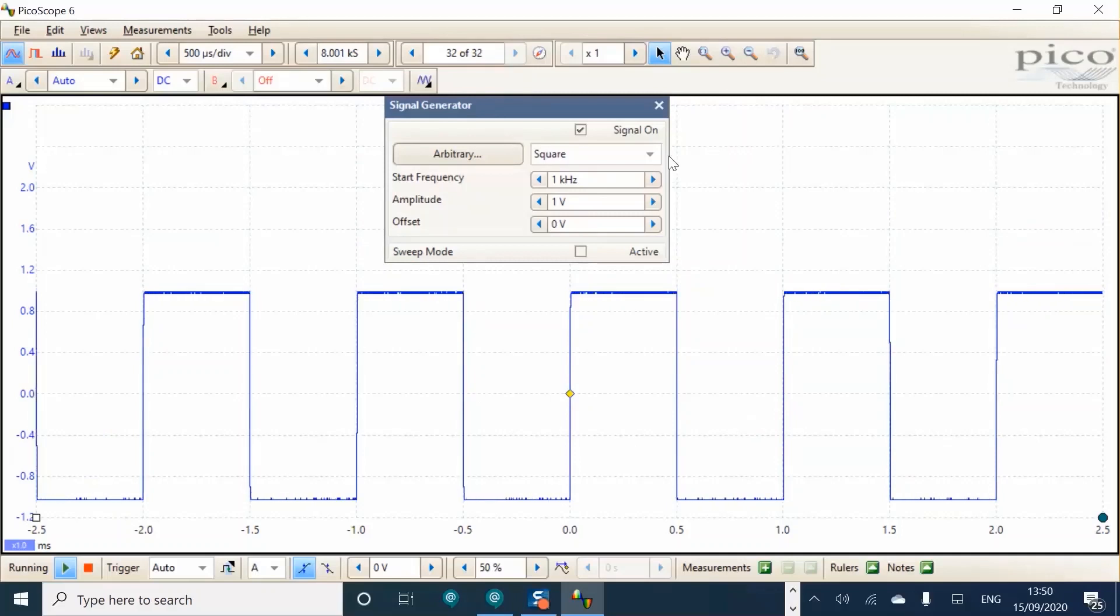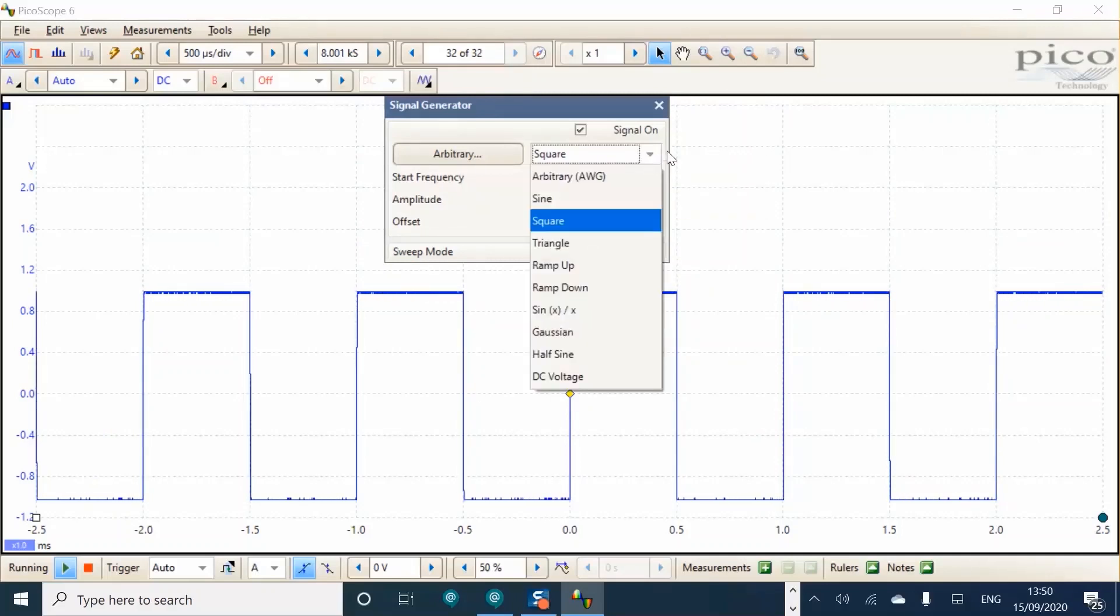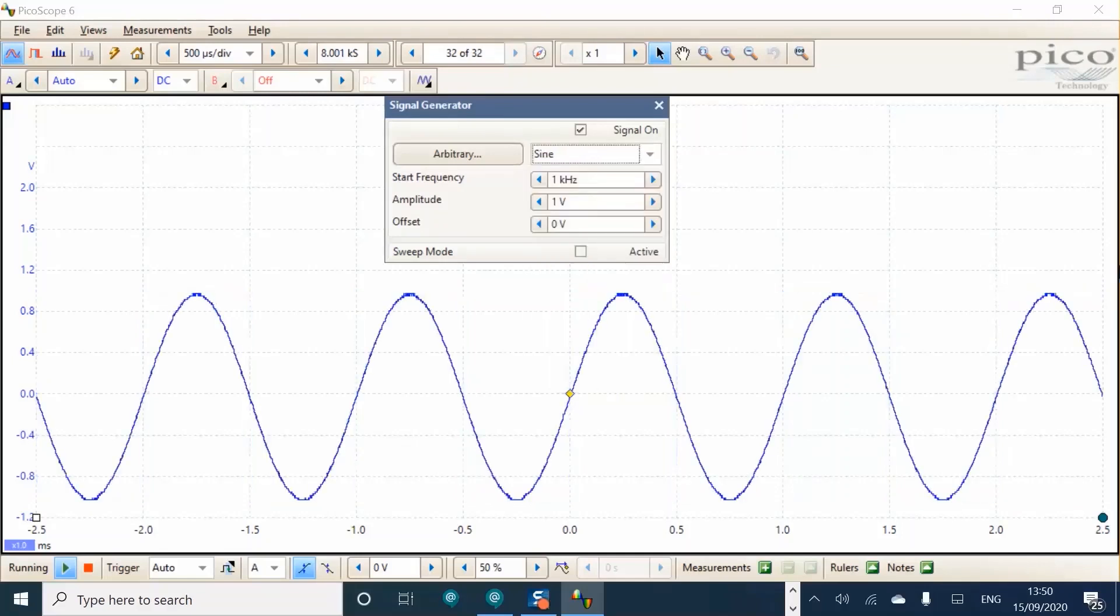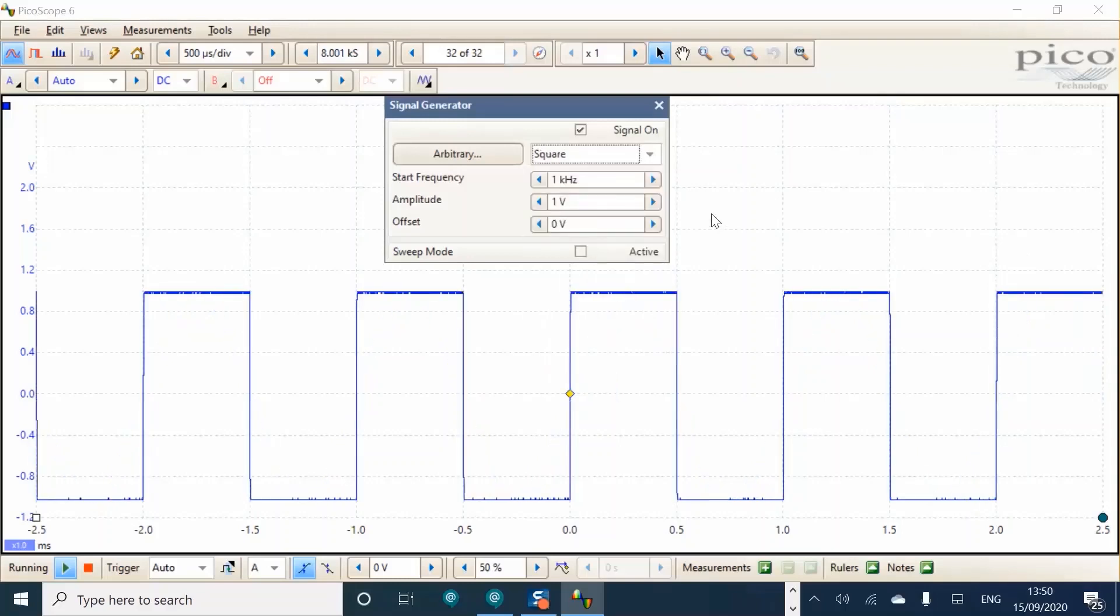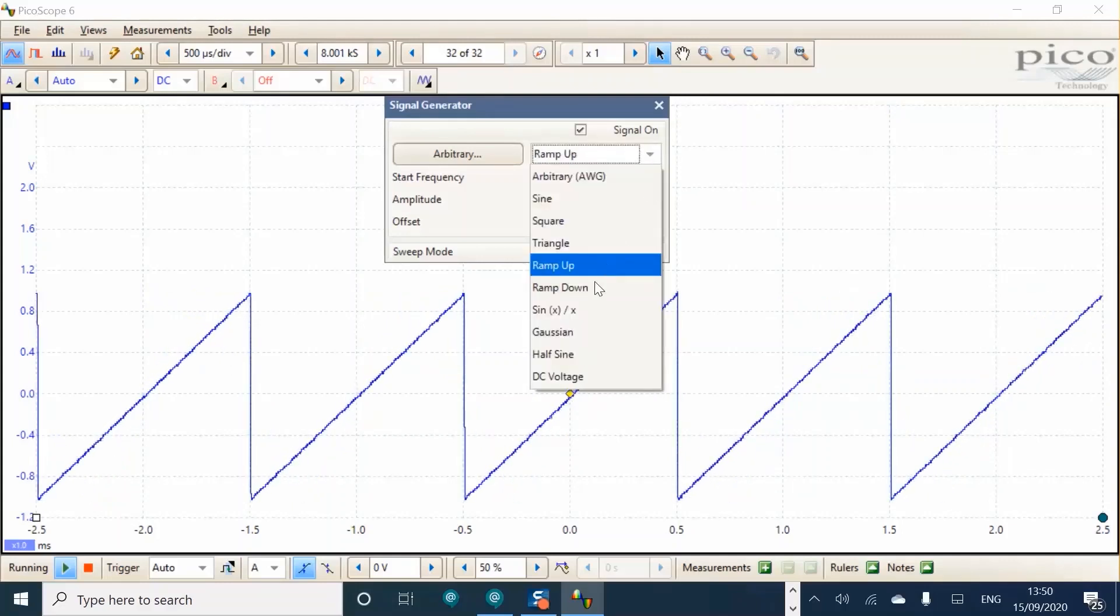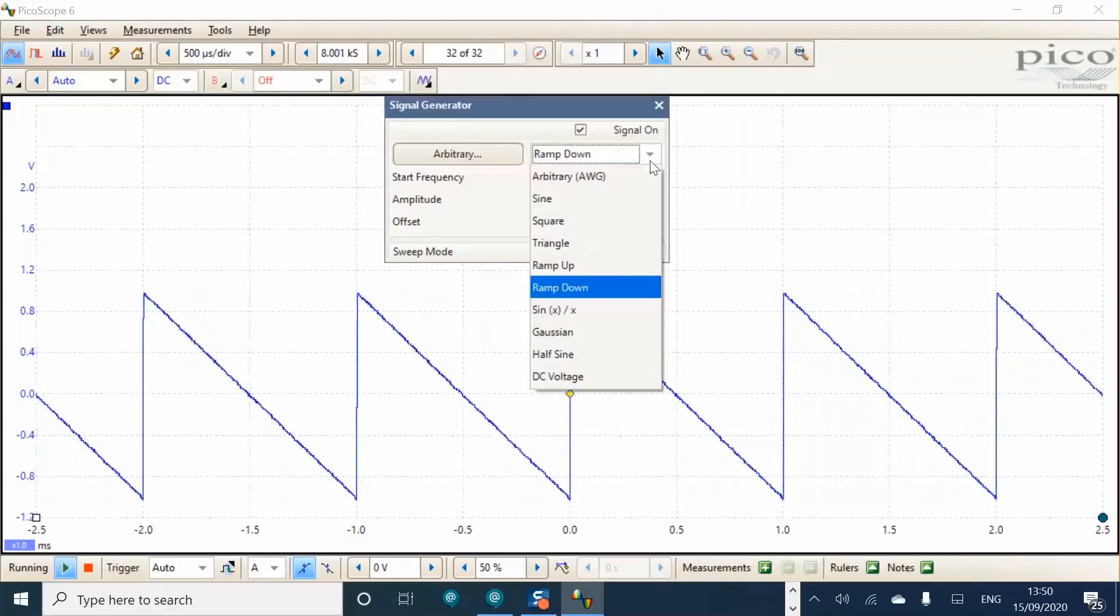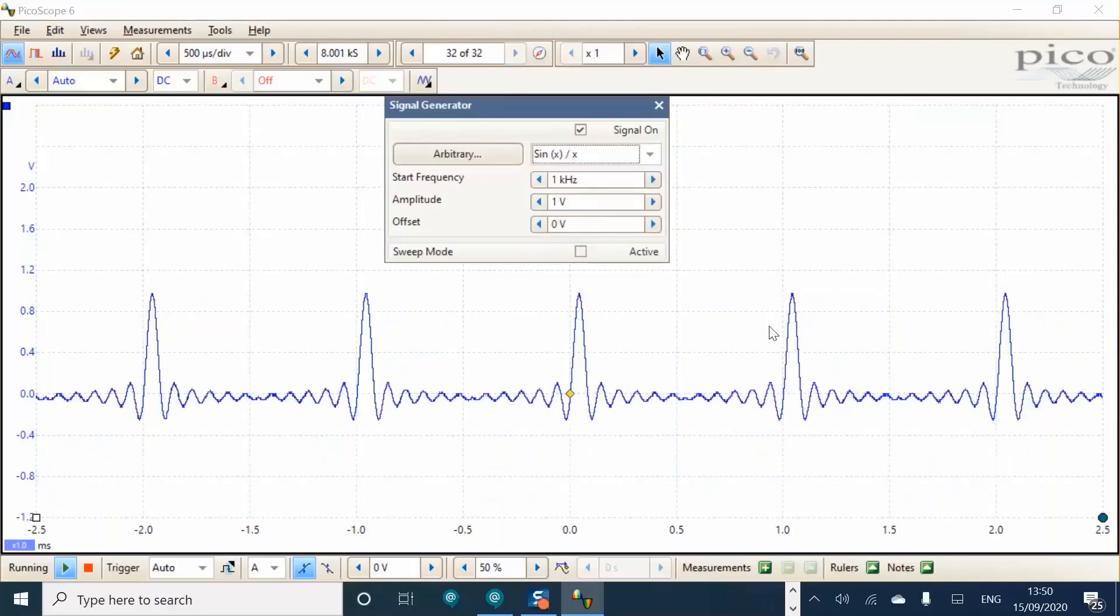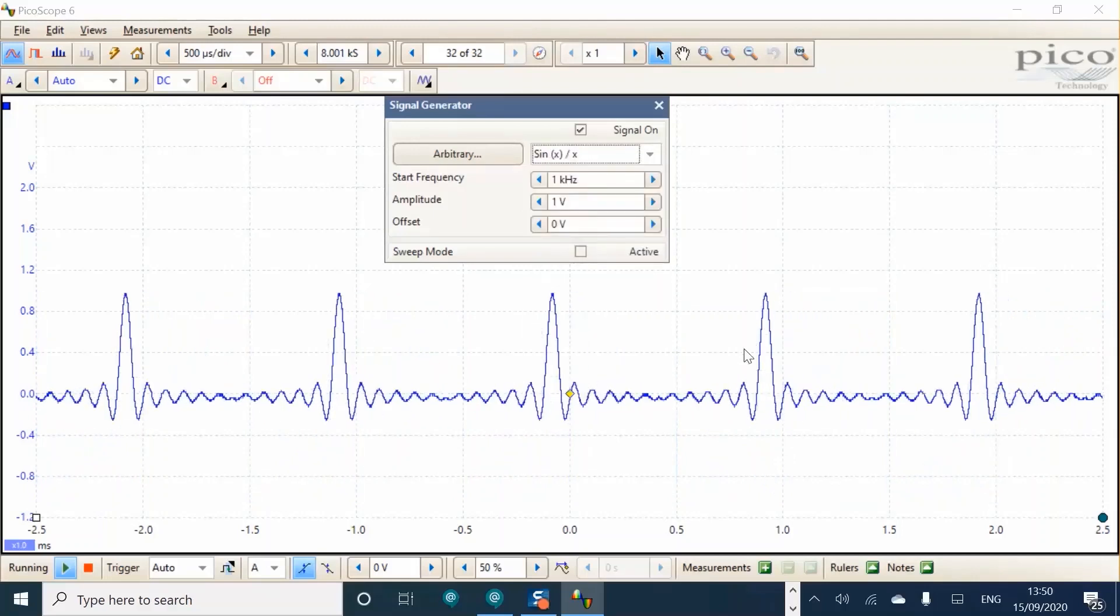Next, select the drop down menu to show the various wave types. Top of the list is arbitrary, which we'll look at shortly. Then we have sine, square, triangle, ramp up, ramp down, sin x over x, which is an interesting wave shape.